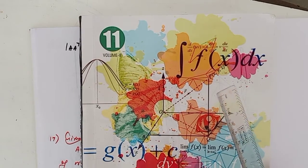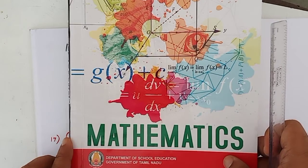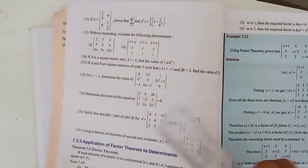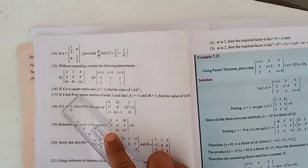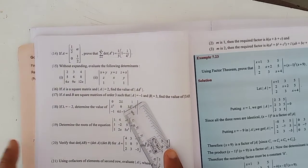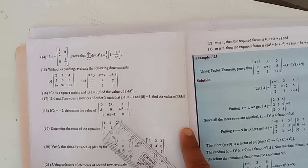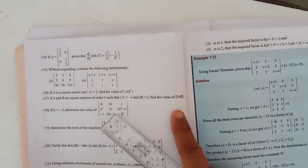This is Vokumar, 11th standard mathematics chapter number 7, continuation of exercise 7.2, problem number 17. If A and B are square matrices of order 3 such that determinant of A equals minus 1 and determinant of B equals 3, find the value of determinant of 3AB.